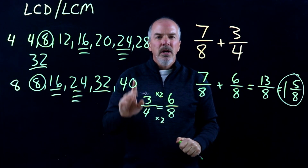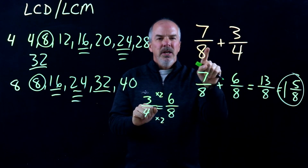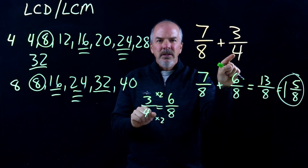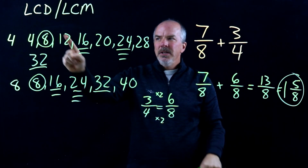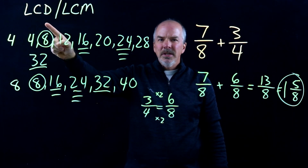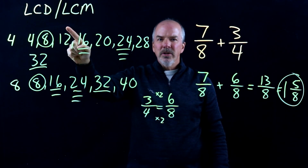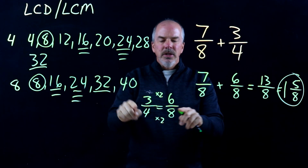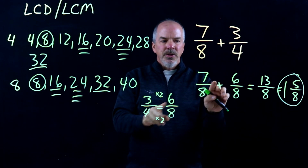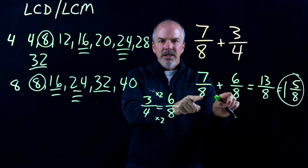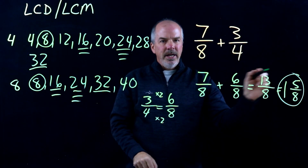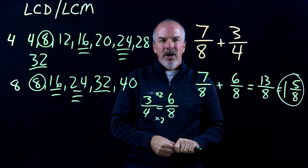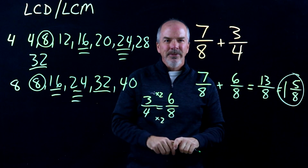So again, the key to this is: in order to add fractions, you have to have a common denominator. It's best to use the least common denominator, which is also your least common multiple. Once you do that, you get equivalent fractions. Once you get equivalent fractions, then you add and put your answer in simplest form. Thank you. See you next video.